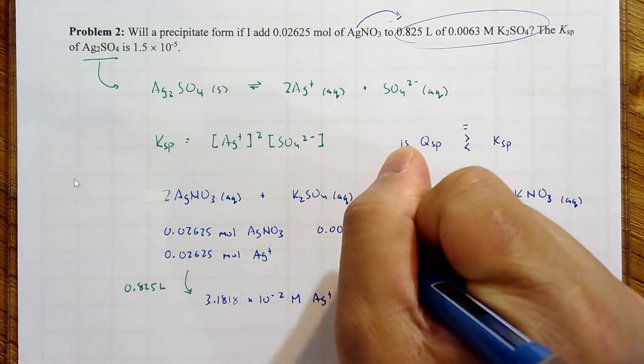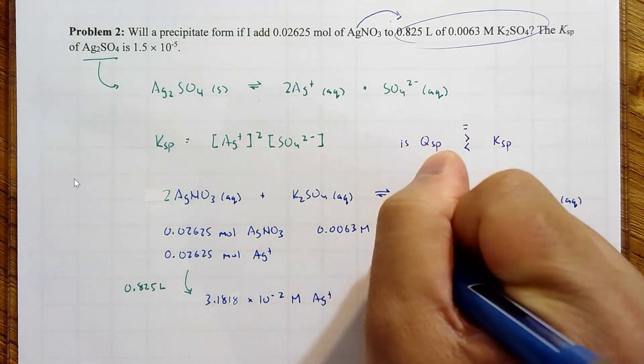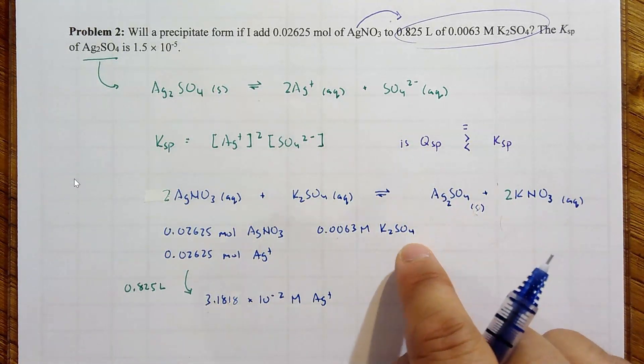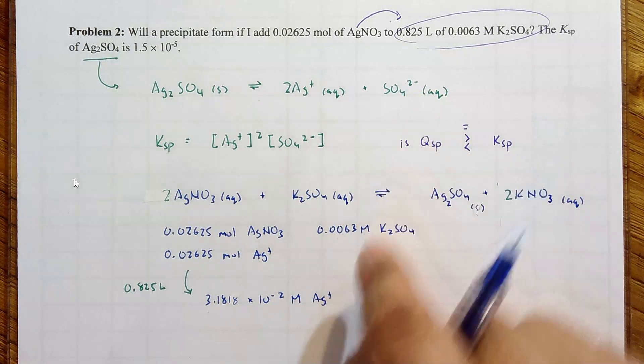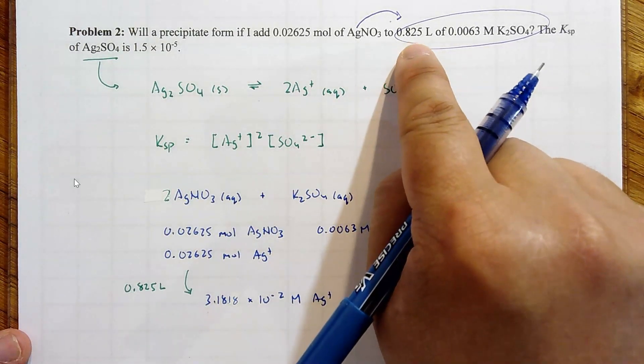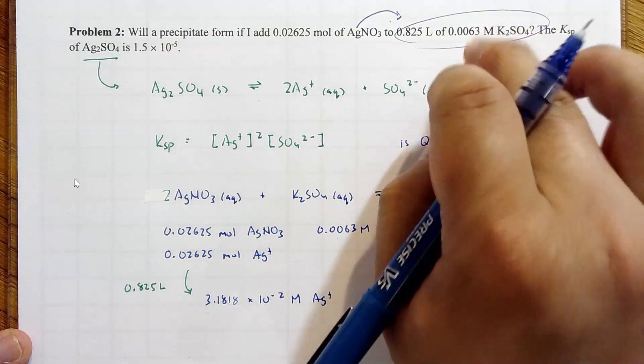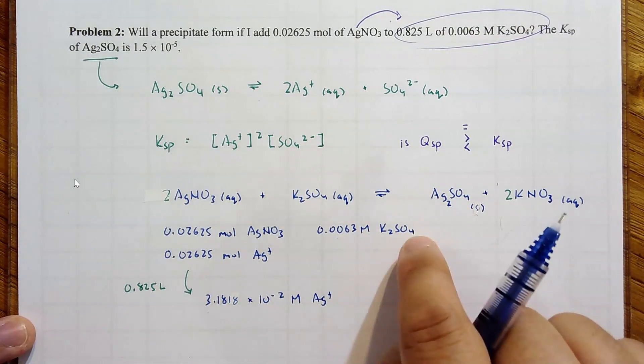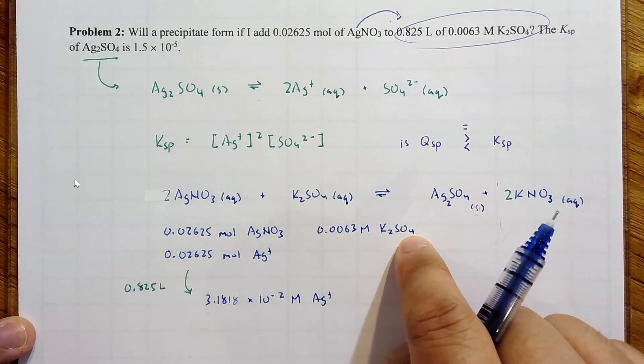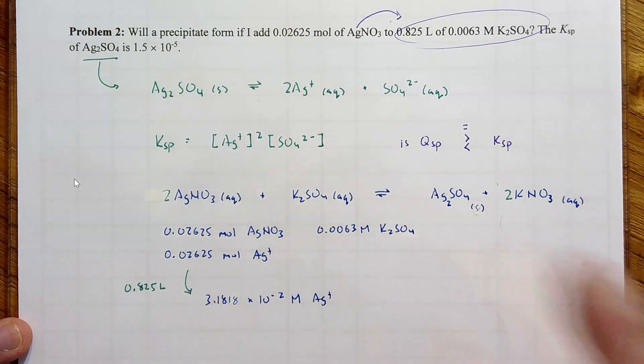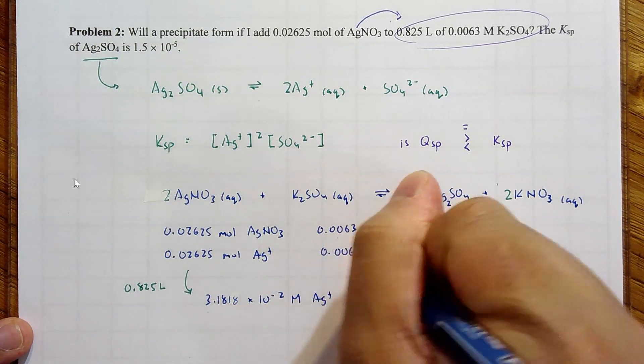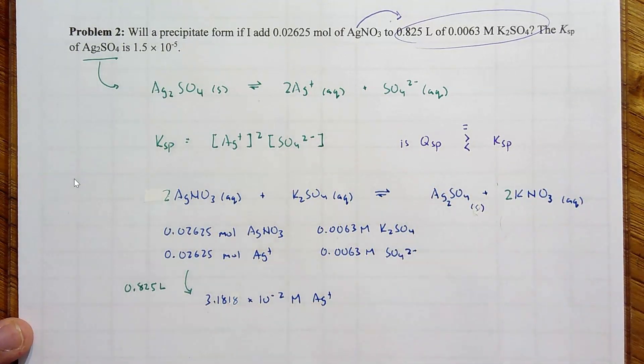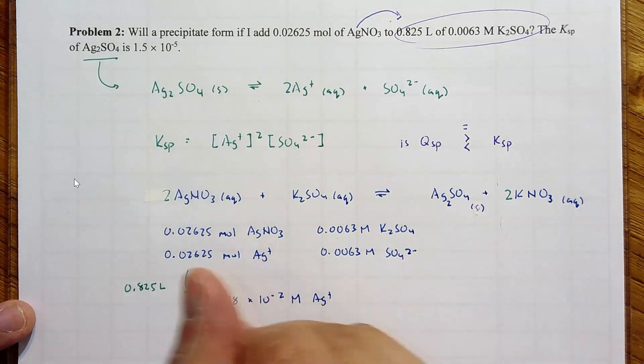Now your potassium sulfate, they already gave you a molarity. 0.0063 molar of K2SO4. And the thing is, that's already in the full volume, 0.825 liters. We're not adding more water, so that concentration is good to use. Now we want to use sulfate. But it's one sulfate ion for every one molecule of K2SO4. So this also is the same, SO4²⁻. That's it.